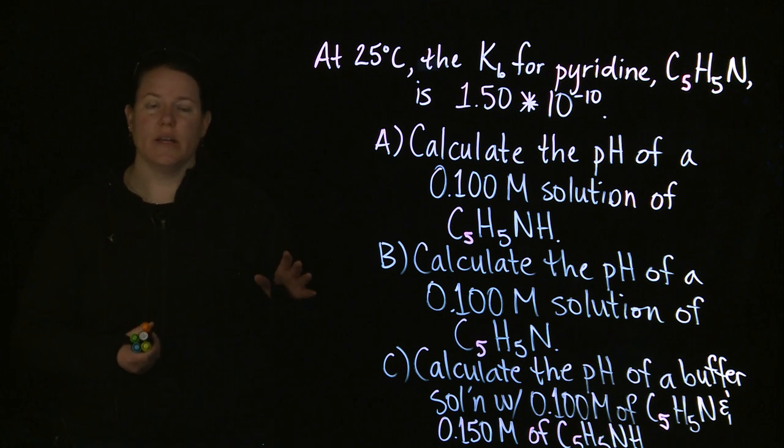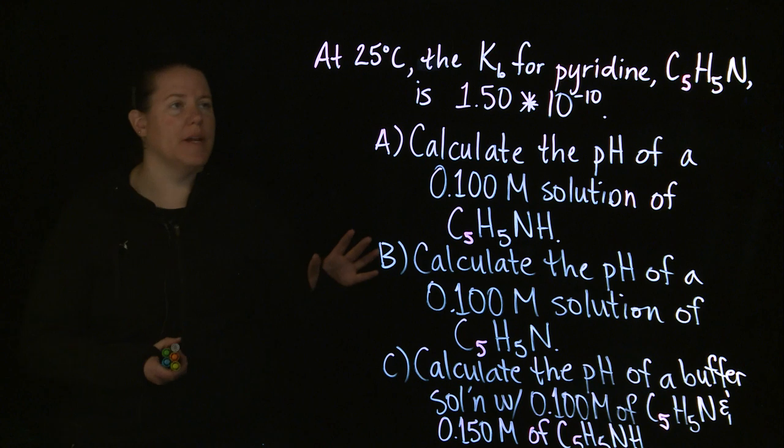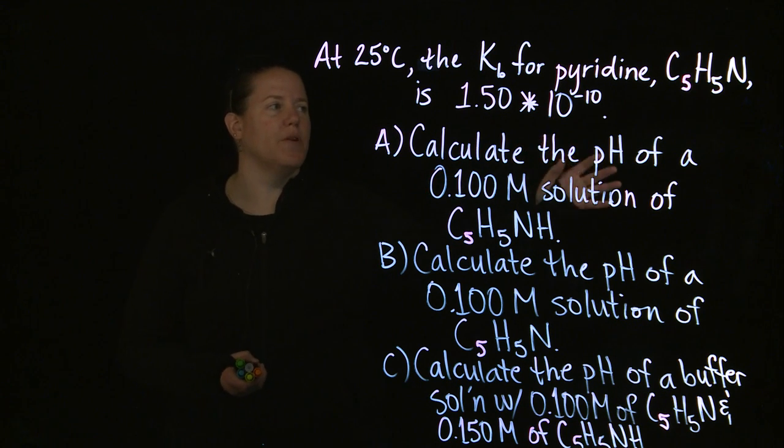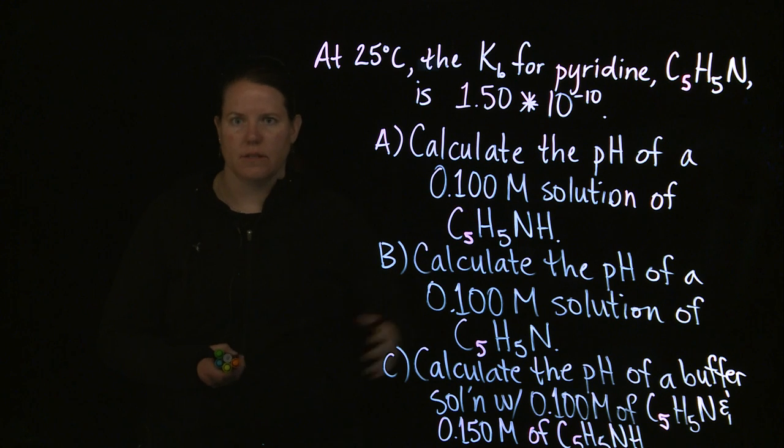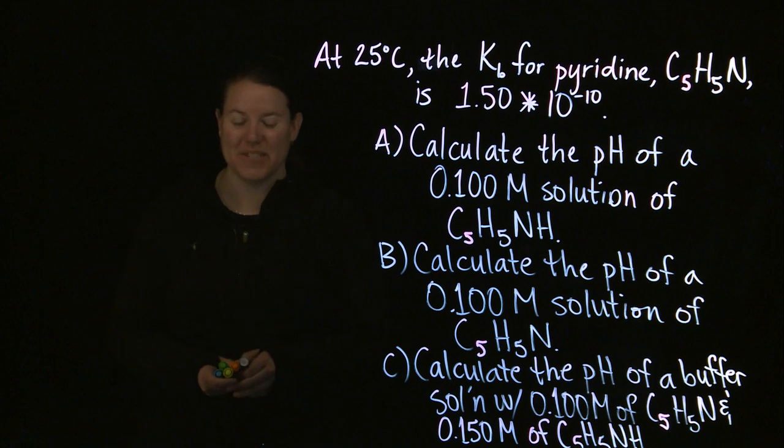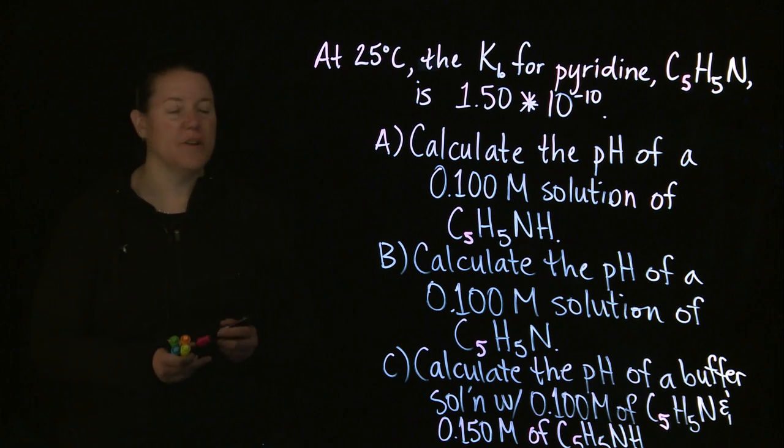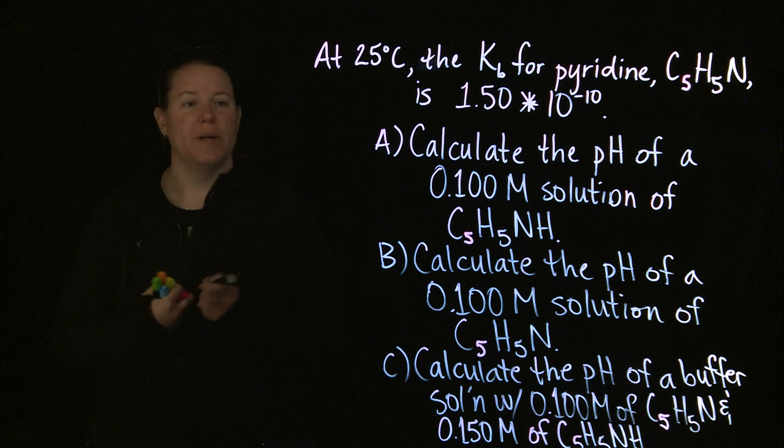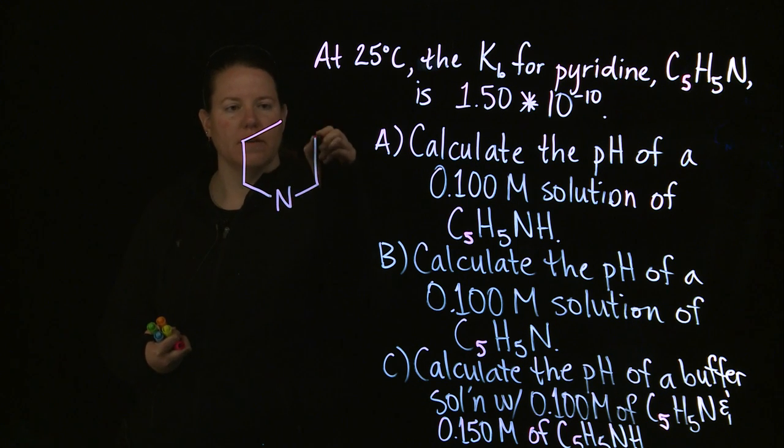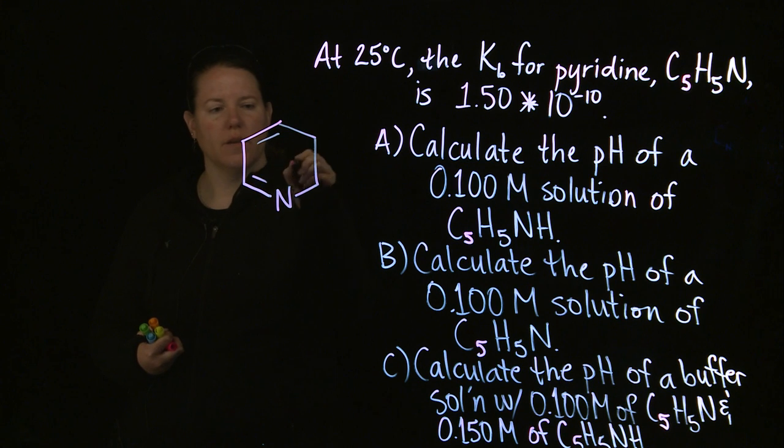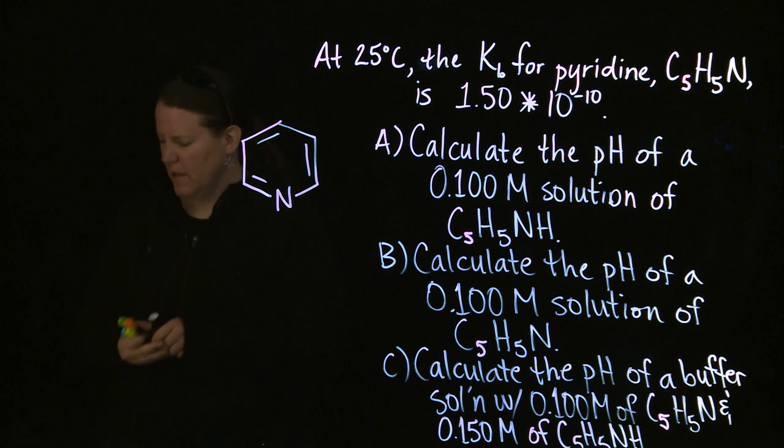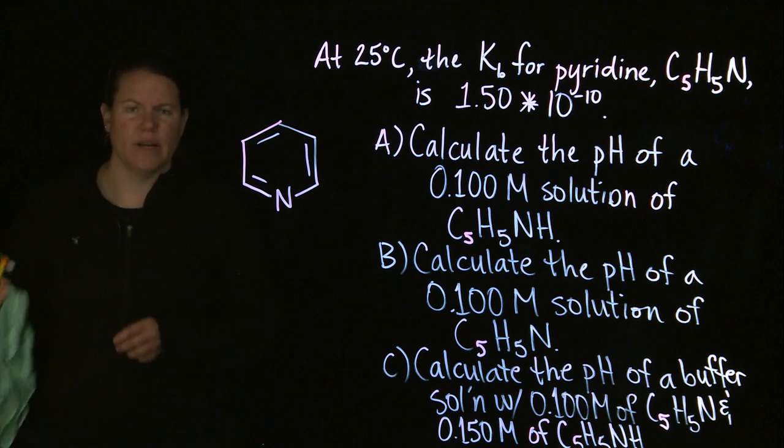This is going to fall partially into the acid-base equilibrium chapter, which is chapter 15 in the book we're using, and we're also going to do some buffers, so the pH of a buffer, which is usually the chapter right after that. In terms of what I can do with this, notice that at the very beginning of the problem, I've only written the Kb for pyridine is 1.50 times 10 to the negative 10th. Pyridine, by the way, is a derivative of benzene, so it has an N replacing one of the Cs.